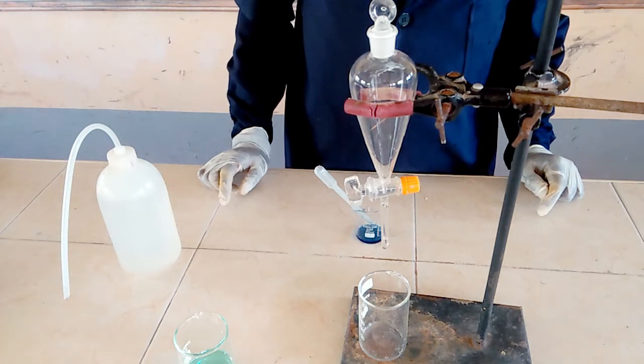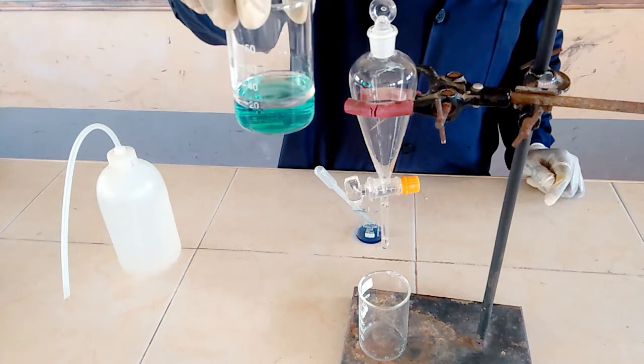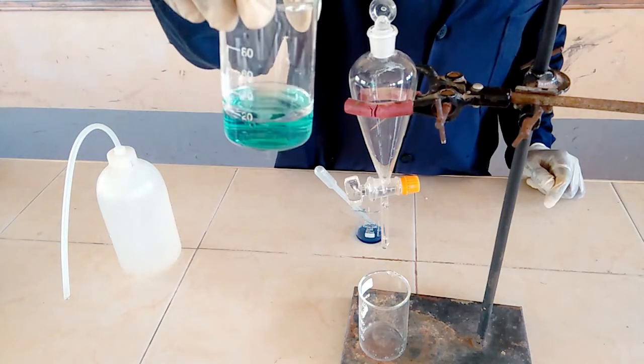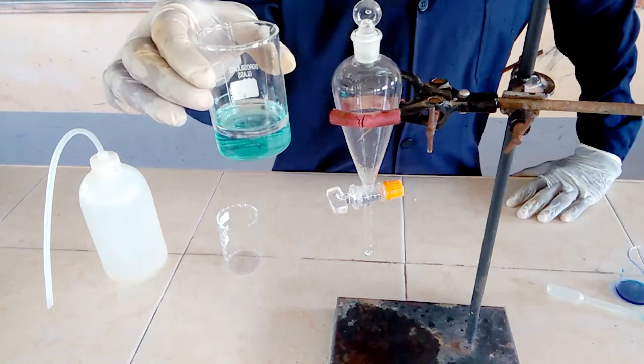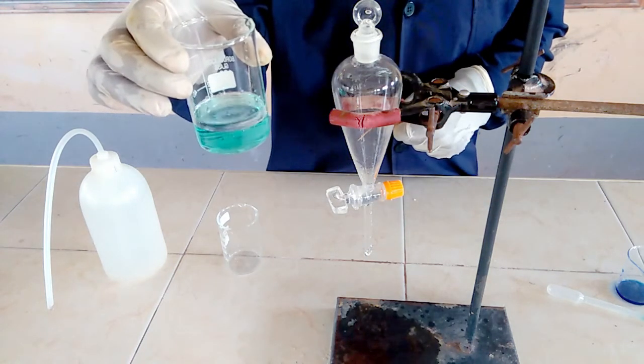For example, I have a mixture of water and paraffin. Remember, immiscible liquids do not mix but form two distinct layers. In my mixture, I have water and paraffin, and paraffin floats on water because it is lighter than water.